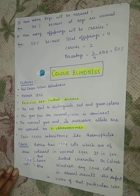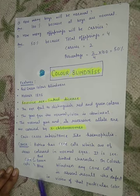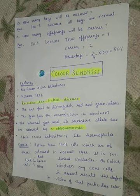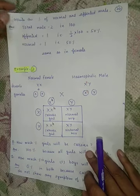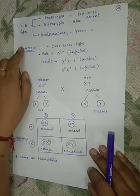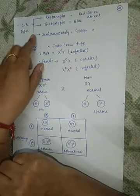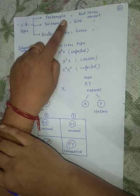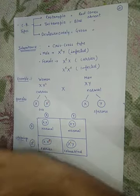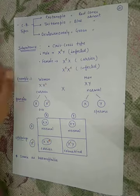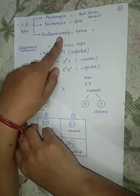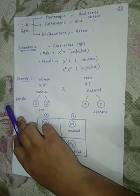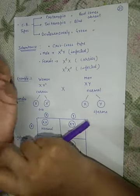Since this is a sex-linked character, any cone cell can become absent. Whatever color's cone cell is absent, the person develops blindness for that color. Color blindness is of three types: Protanopia, in which red cones are absent and the person is blind for red color; Tritanopia, in which blue color cones are absent; and Deuteranomaly, in which green color cones are absent. We don't need to go into too much detail — this is just for knowledge.